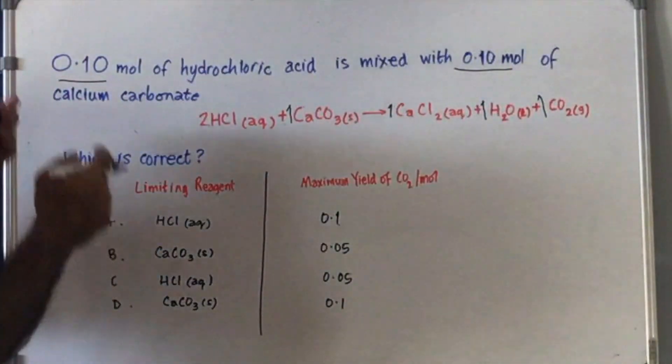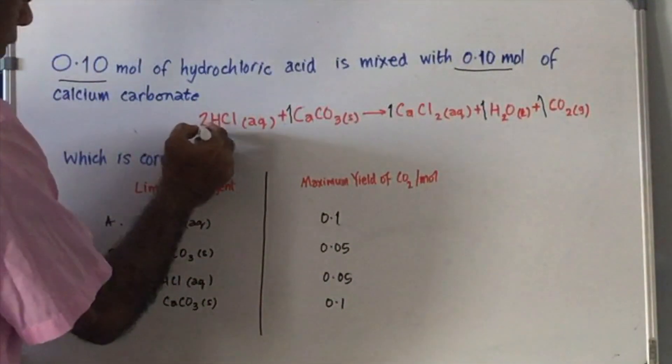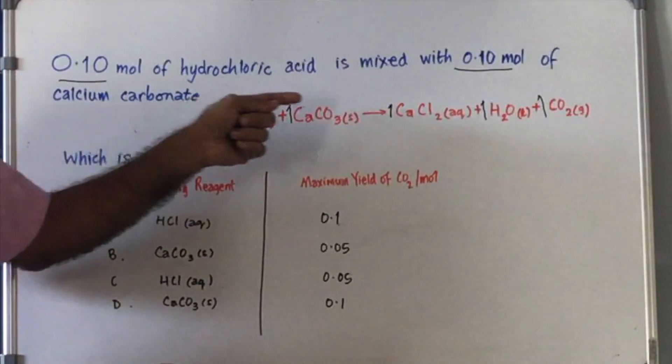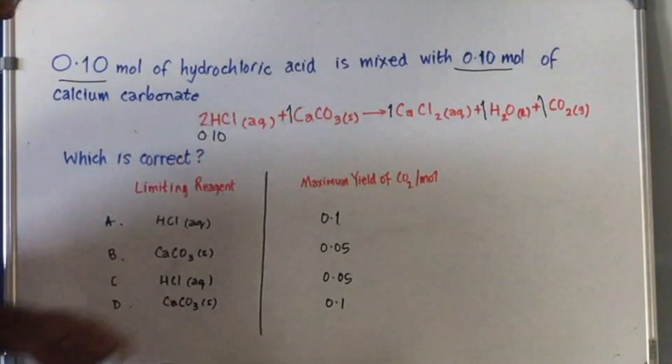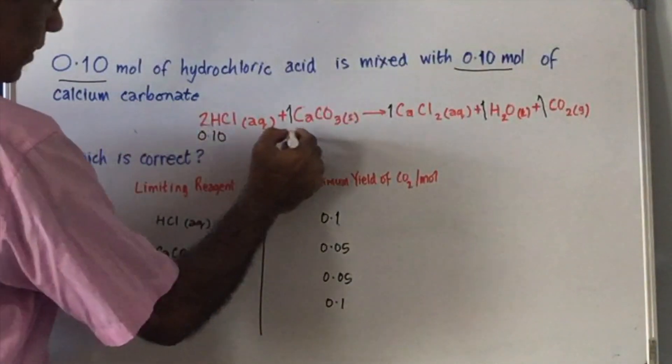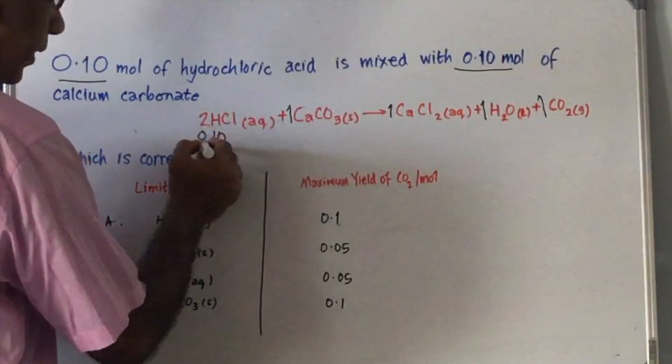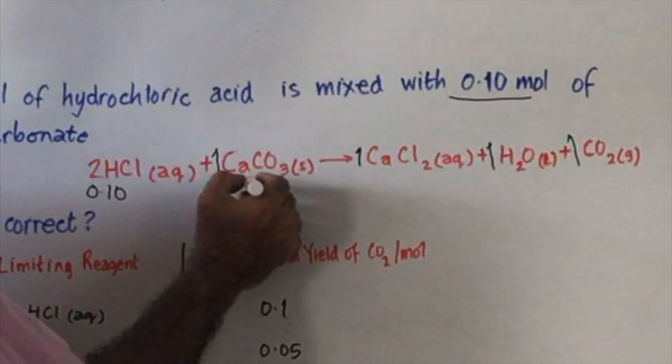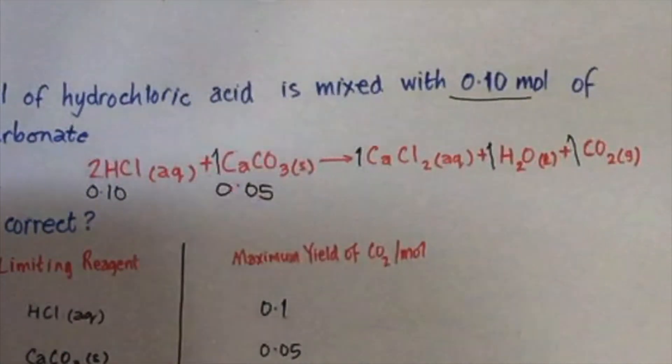So if you in fact have 0.10 moles of something that is in a 2 to 1 ratio with the other reactant, that means that the complete reaction would happen with 0.10 moles and 0.05 moles. That's how you get 2 to 1 ratio.